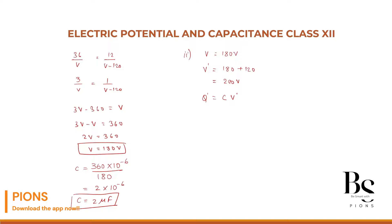Again, I am repeating capacitance value doesn't change. C will be 2 into 10 to the power minus 6. Voltage new will be 200. So the new charge will be 400 micro coulombs. Done.